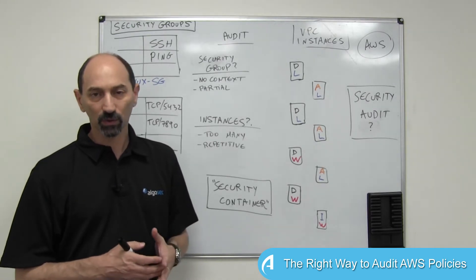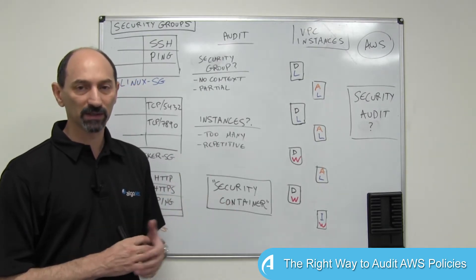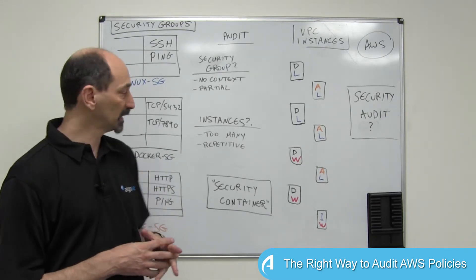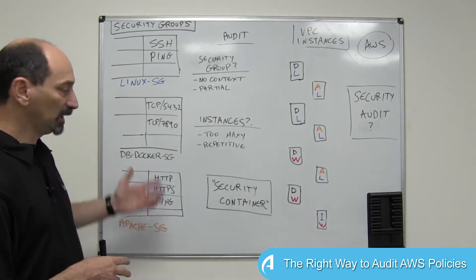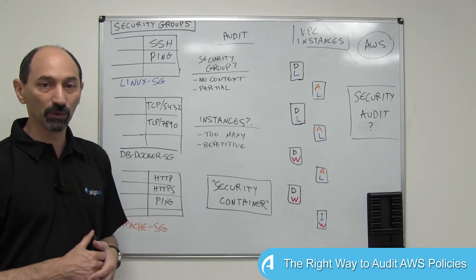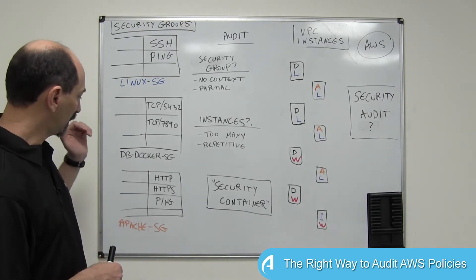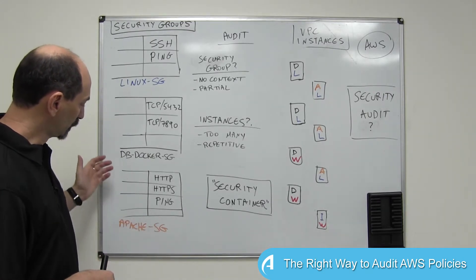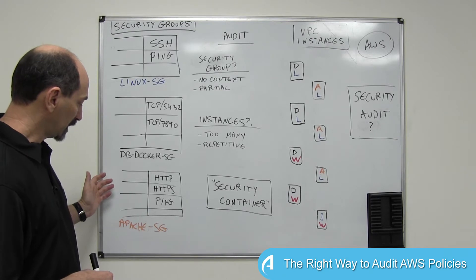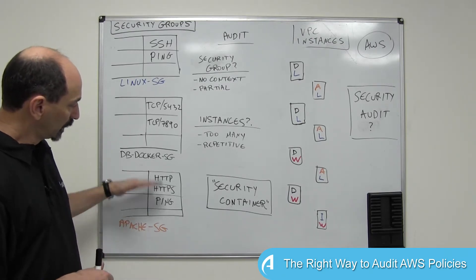So the obvious choice, if you're just using the plain vanilla AWS tools, is to look at each of these security groups and review it. So you can look at the rules for Apache web servers in the Apache security group,